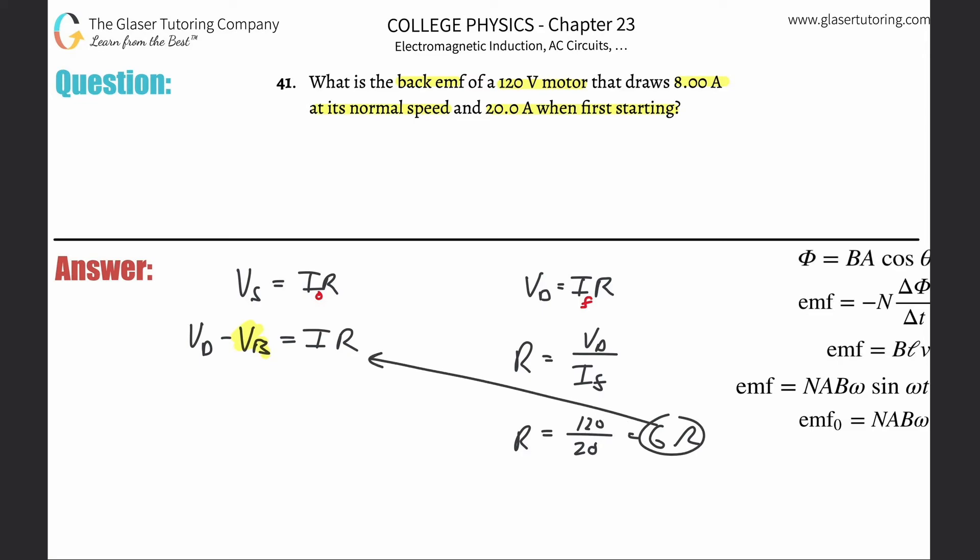We're going to plug in. And finally, now we know everything. So the driving voltage here was 120 minus the back voltage equals the operating current, which was 8 times the 6 Ohms. So all we got to do is take 120 minus 8 times 6. So we get 72. The back voltage here is about 72 volts, or the back EMF. And that's it.